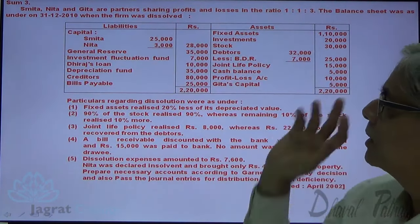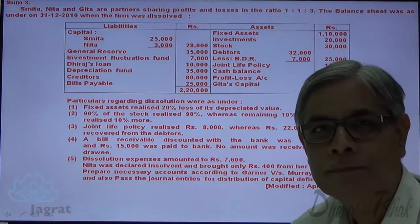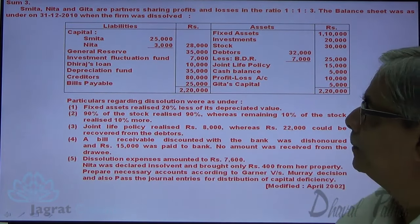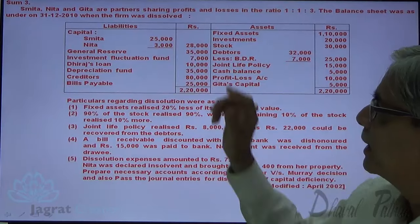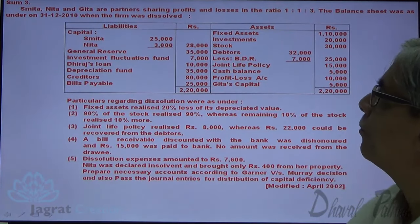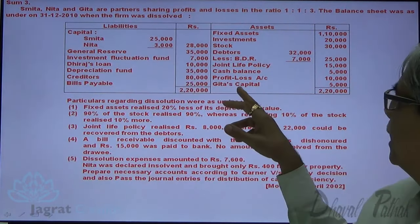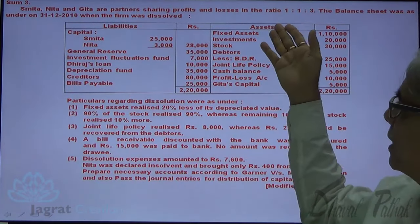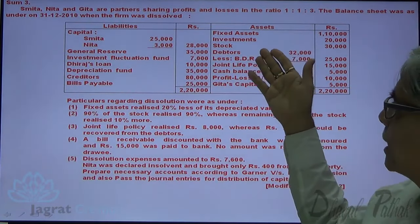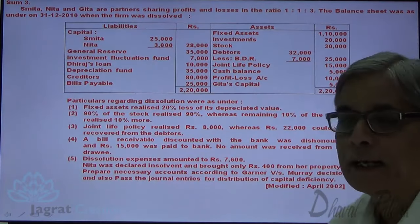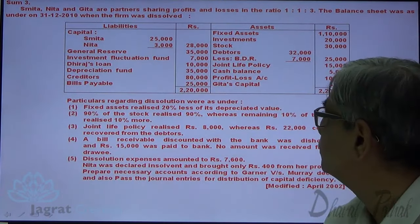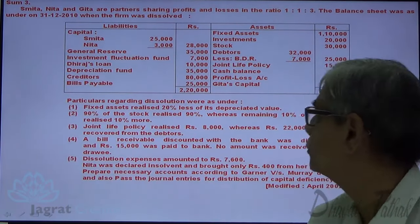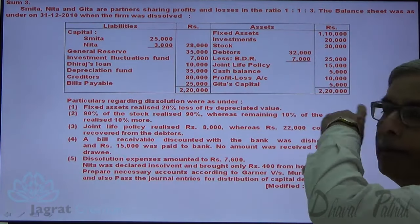When the firm was dissolved, the capital of Smita and Nita was $25,000 and $3,000 respectively, and the capital of Gita shows a debit balance of $5,000. Assets include fixed assets, investments, stock, debtors, budget, diesel, joint life policy, and cash and bank. There is also a profit and loss account debit balance of $10,000 and debit balance of Gita.